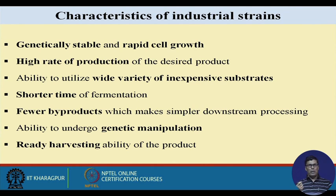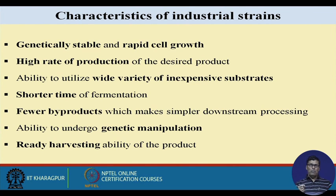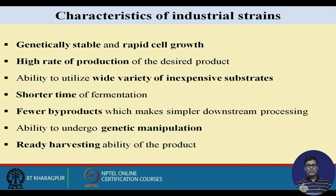Short fermentation time is important because in industry, time is very costly. The time of fermentation should be as low as possible; using industrial strains can reduce fermentation time. Byproduct formation should also be minimized, as more byproducts mean the substrate is diverted away from producing the desired product, which is unacceptable.